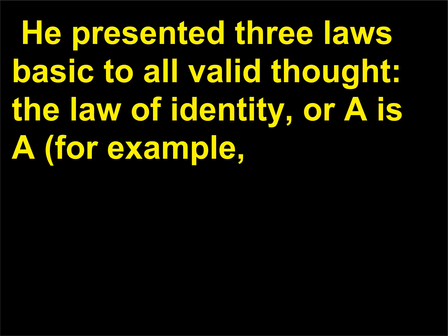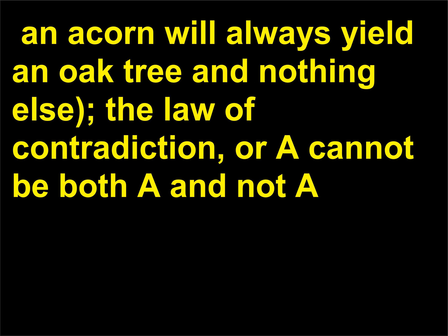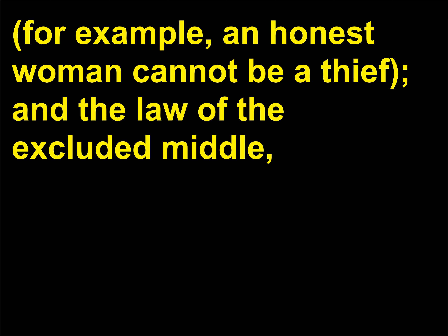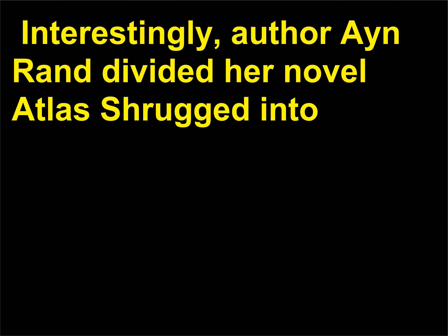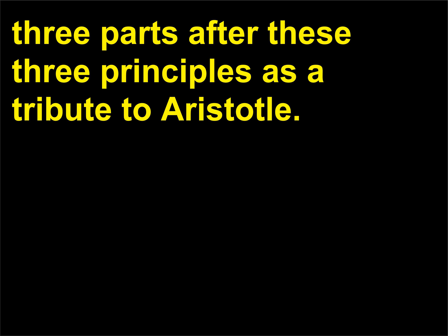The three laws are: the law of identity (A is A) — for example, an acorn will always yield an oak tree and nothing else; the law of contradiction (A cannot be both A and not A) — for example, an honest woman cannot be a thief; and the law of the excluded middle (either-or, in which A must either be A or not A) — for example, a dog can be brown or not brown. Interestingly, author Ayn Rand divided her novel Atlas Shrugged into three parts after these three principles as a tribute to Aristotle.